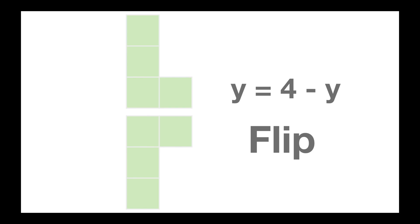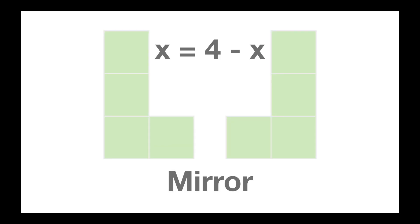Similarly, flipping something takes the y's and makes the same type of translation: 4 minus y. When you do that, you're flipping across the x equals 2 axis. The mirror flips across the y equals 2 axis.